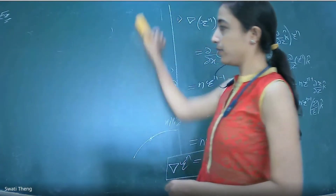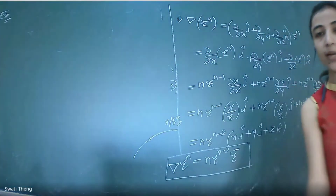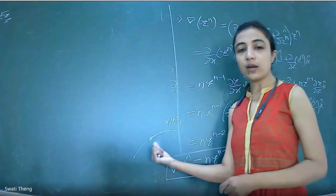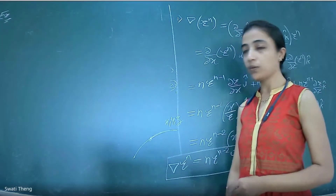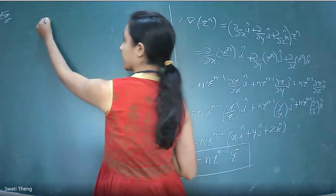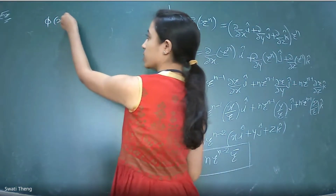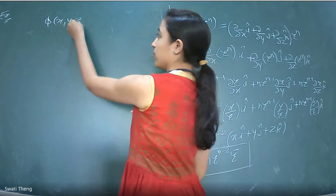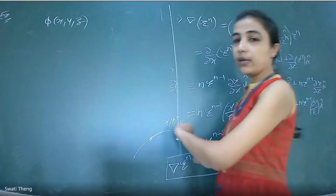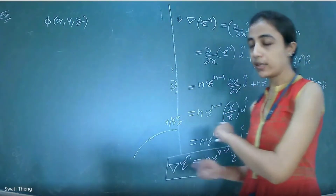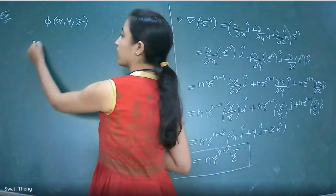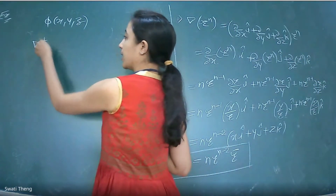It is a gradient of φ. Now, φ(x, y, z) is a scalar function defined on this curve or surface. We define ∇φ, which gives a vector quantity. So if we take the gradient of the scalar function on the surface, we get ∇φ.